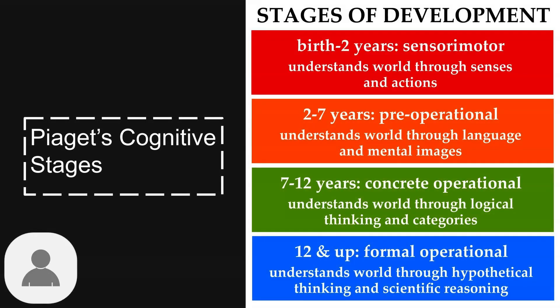Piaget identified four major stages of cognitive development. The sensorimotor stage, from birth to age two, involves understanding through senses and actions. The pre-operational stage, from two to seven years,